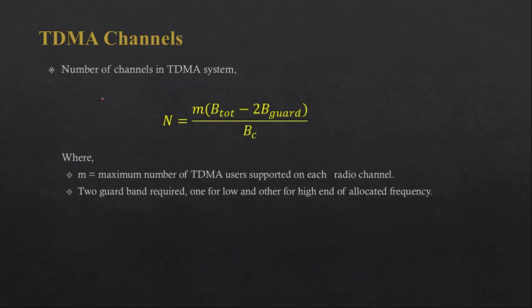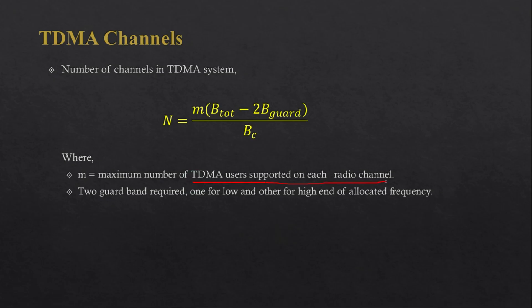The total number of channels supported by a TDMA system is given by: N = m × (B_total − 2 × B_guard) / B_c. This is similar to the FDMA formula, with the addition of m, which is the maximum number of TDMA users supported on each radio channel. Two guard bands are required — one at the low end and one at the high end of the allocated frequency. You can solve examples based on this equation. That is all about TDMA — thank you for watching.